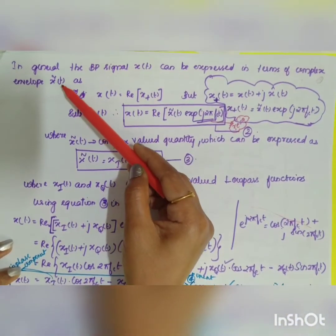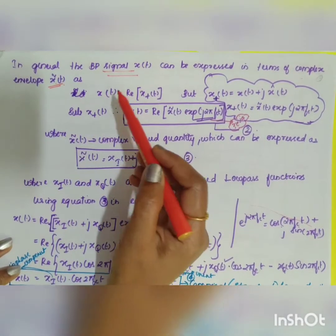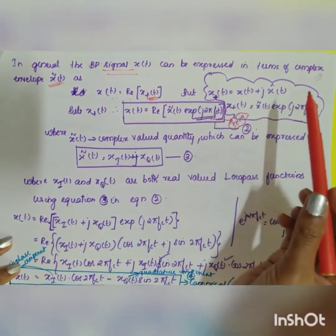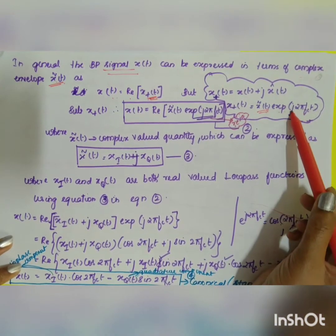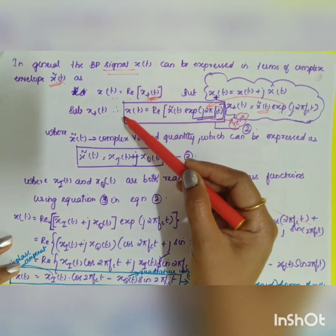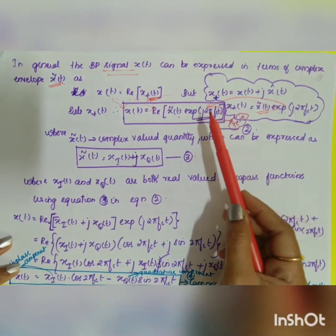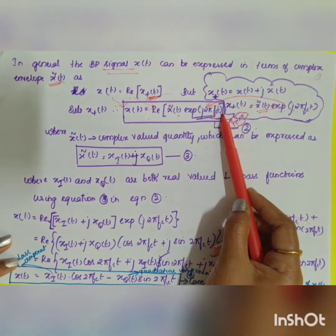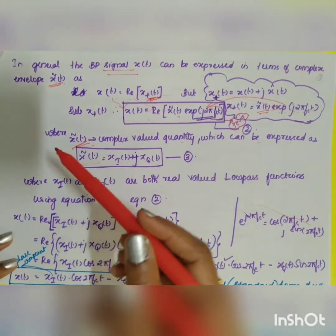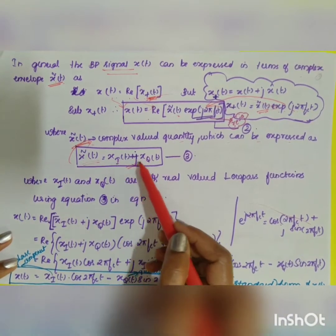The bandpass signal x(t) can be expressed in terms of the complex envelope x̃(t) as: x(t) = Re{x⁺(t)}. Since x⁺(t) = x̃(t)·e^(j2πfc·t), we substitute to get x(t) = Re{x̃(t)·e^(j2πfc·t)}. The complex-valued quantity x̃(t) can be expressed in rectangular (Cartesian) form as its combination of in-phase and quadrature components.